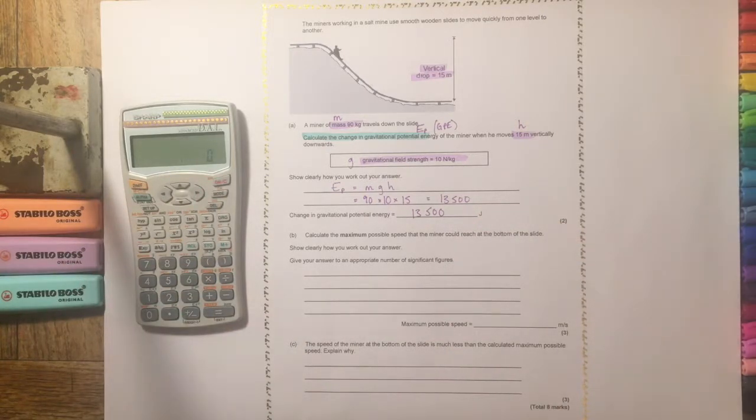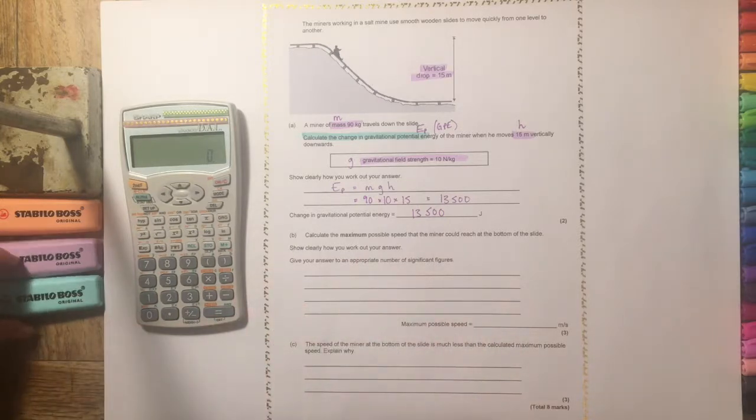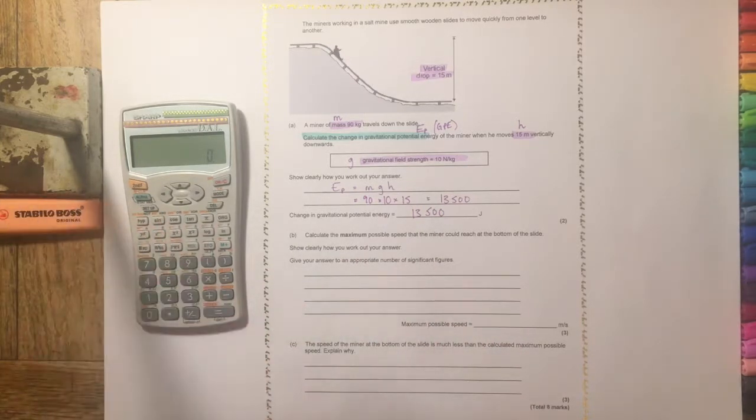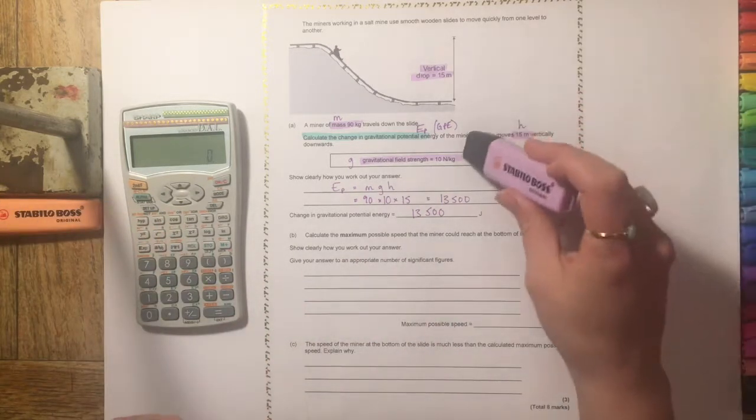So that's the first part of this question. So then we're going to move on to the next part. So we're going to get our highlighters again. Remember that purple we've been using for data.